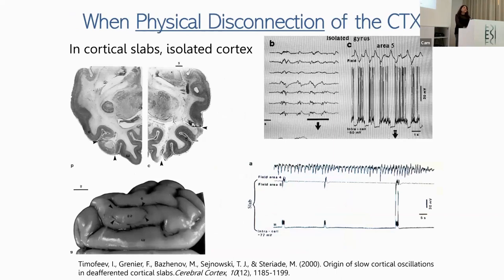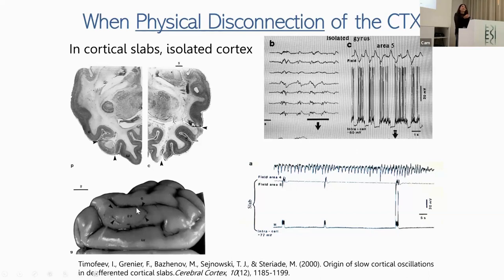Very interestingly, slow waves also appear when there is a physical disconnection of the cerebral cortex. Work by Igor Timofeev et al. in Steriade's lab found that if they completely cut a full gyrus, the remaining piece — as long as there was blood supply — would still generate quite normal up and down states. Furthermore, even a smaller slab would still show up and down states, though a bit less frequent. This tells you that you don't need much — just some piece of cortex, rather small, in order to see this slow oscillatory activity.